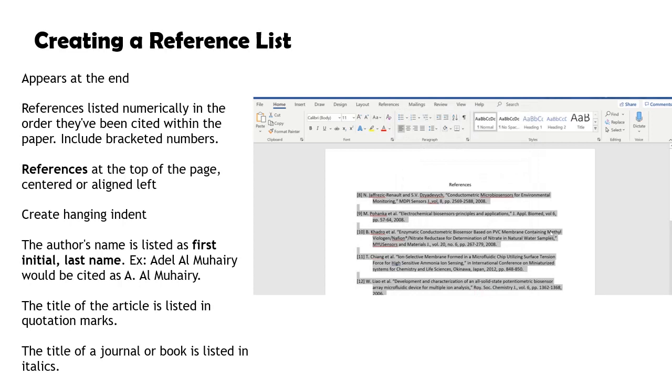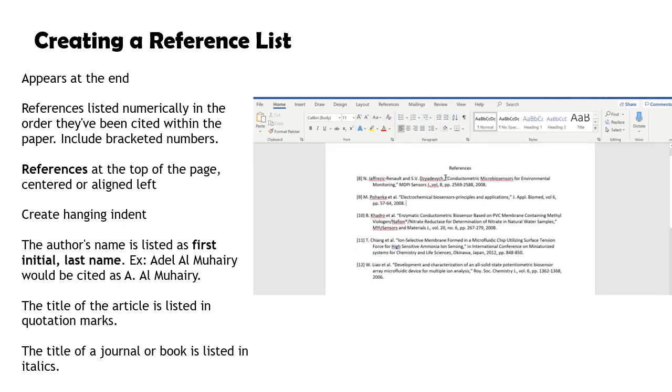The author's name is listed as first initial, last name. The title of the article is listed in quotation marks. The title of a journal or book is listed in italics.